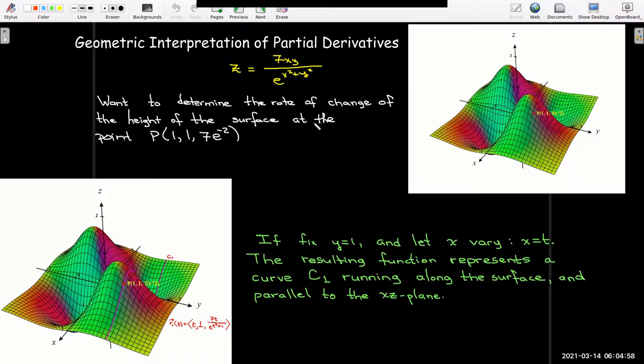So our idea of partial derivatives is that we're going to fix or keep constant the y value, in this case y equals 1, and we're going to let x vary.